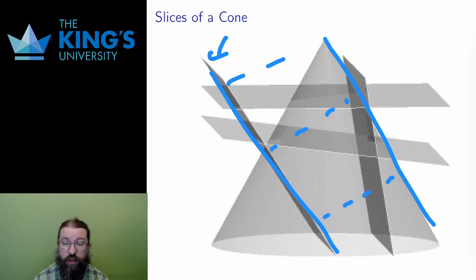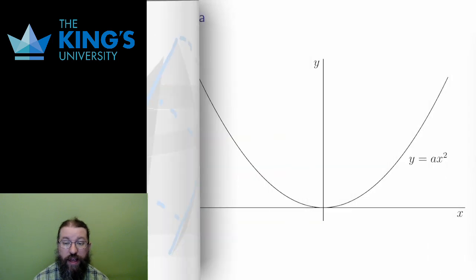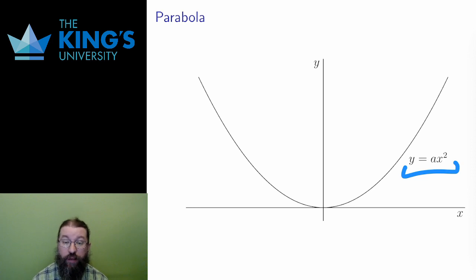If it is centered at the origin, the equation is y equals ax squared. The parameter a controls how wide the parabola is. If a is large, the parabola is narrow. And if a is small, the parabola is wide.